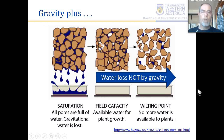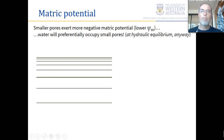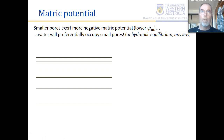At the permanent wilting point, matric potential is minus 1500 kilopascals; water is only resident in very small pores — about 0.1 microns in diameter. It is between these two thresholds, field capacity and wilting point, that water is available to plants. Smaller pores exert a more negative matric potential, so water preferentially occupies those small pores. At equilibrium, at any given water content, pores are full from the smallest up to the largest.